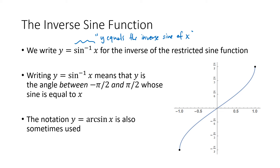That will become important when we use inverse trig functions to solve equations. Regarding the negative 1 notation: inverse sine of x is not the same as sine of x to the negative 1, because that would be cosecant of x — just 1 over sine of x. It's a bit unfortunate that we use a negative 1 exponent here when it already has a different meaning, but we keep track of that. Because of this confusing notation, sometimes you'll see it written as arcsine, A-R-C-S-I-N. That's actually better notation in my opinion, but less common, so I'll continue using the negative 1 exponent notation.